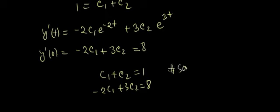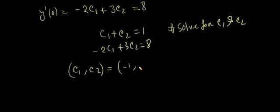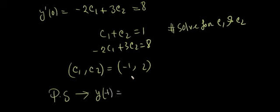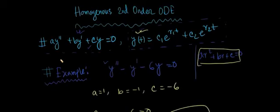Now you just need to solve for c1 and c2. If you do that, the solution will be c1 = -1 and c2 = 2. So our particular solution is minus e^(-2t) + 2e^(3t). This is how you can easily solve when the roots are distinct, that is r1 ≠ r2.